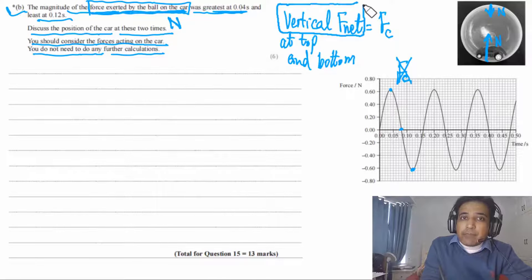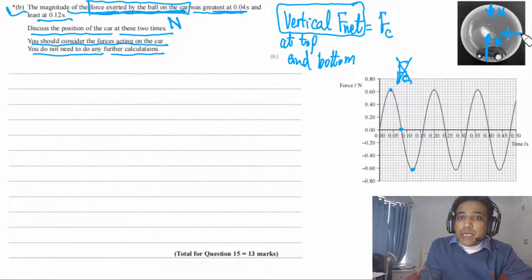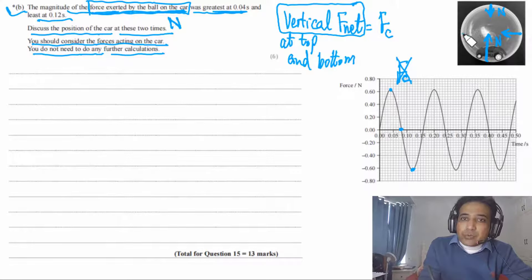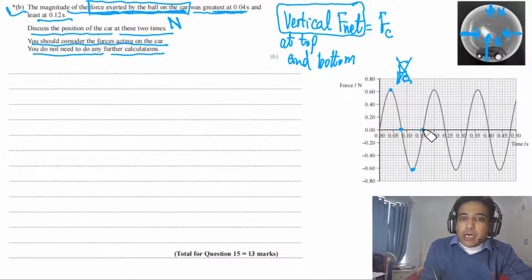At the sides, the only resultant force on the car is horizontal, so vertical net force equals zero. This explains why the graph shows zero at those positions. At top and bottom, the vertical net force equals the centripetal force.